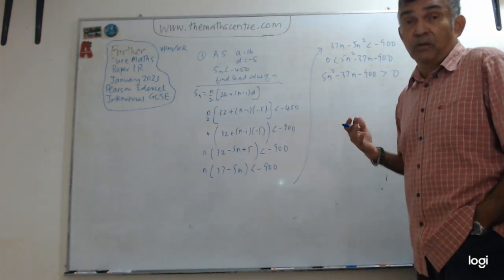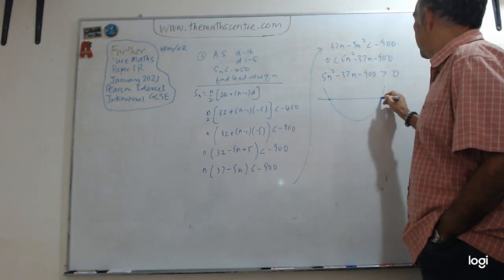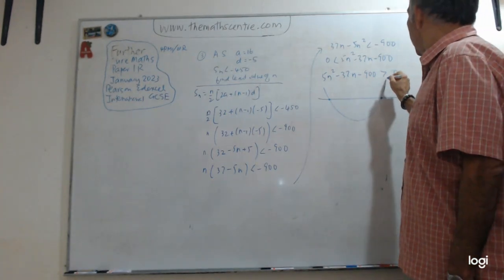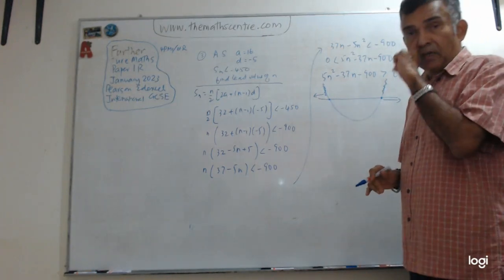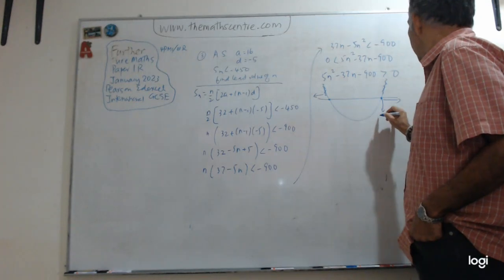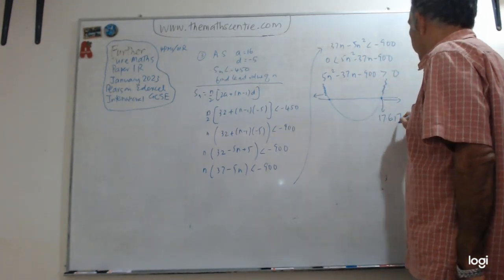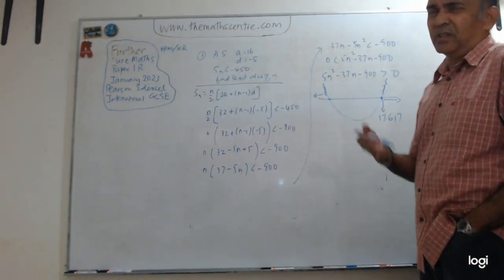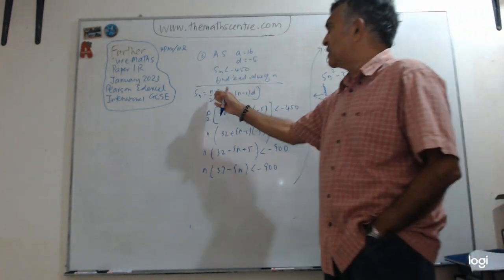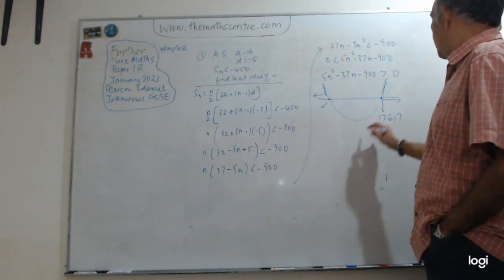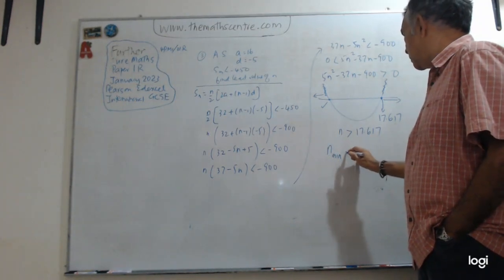Since we can't easily factorize, we use the quadratic formula with a calculator to find the two roots of 5n² minus 37n minus 900 = 0. This is a quadratic curve and we need it to be bigger than 0, so we look at the region outside the roots. Using the quadratic formula, the positive root is approximately 17.67. We ignore the negative root because n is a number of terms and can't be negative. So n must be greater than 17.67, meaning the smallest integer value of n is 18.